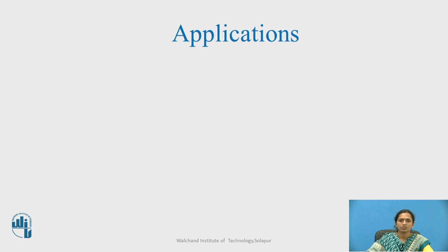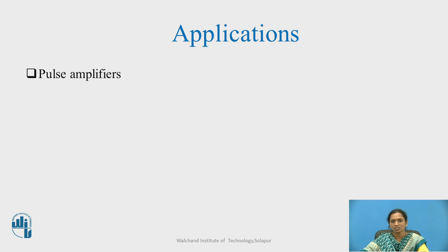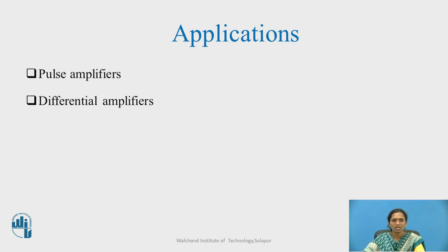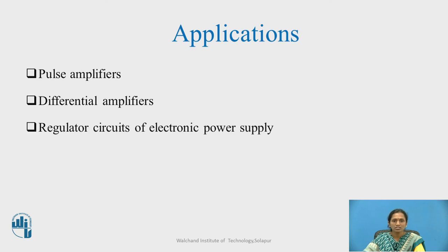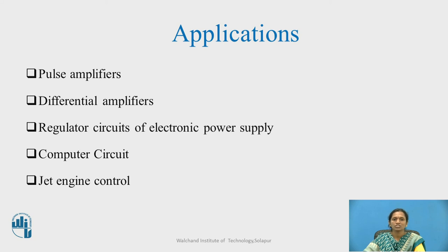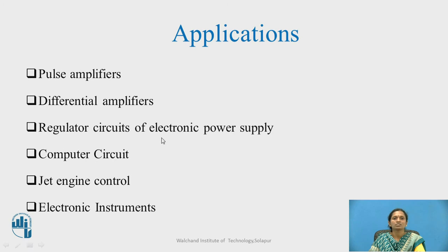Applications: due to its excellent frequency response, the direct coupled amplifier is used in pulse amplifiers, differential amplifiers, regulator circuits for electronic power supplies, computer circuits, jet engine control, and electronic instruments. This type of amplifier is particularly useful in computer circuits and regulator circuits because of its flat frequency response.